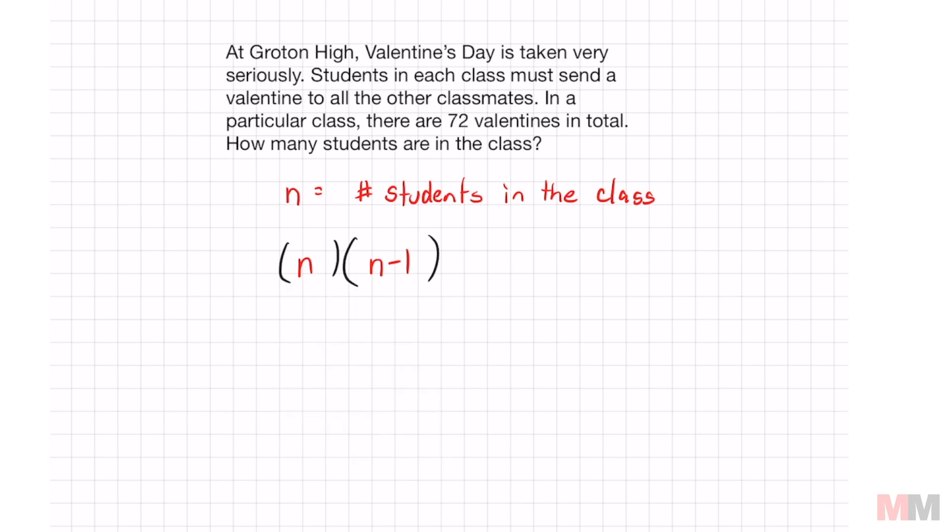This information also says that 72 valentines were given in total, so we can equal that to 72 and we got ourselves a quadratic equation. You could do guess and check, but we might as well review quadratic equations.